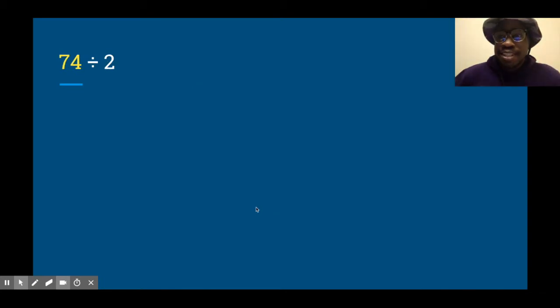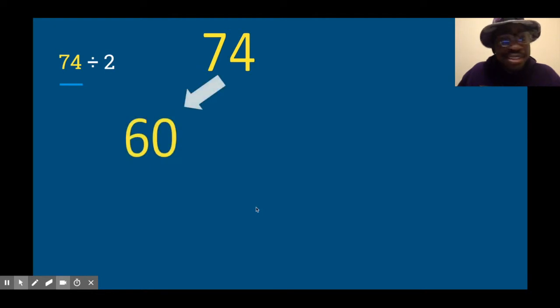All right, let's do another one. 74 divided by 2. Now this one's a little bit bigger than the other ones. Let's decompose 74 into smaller numbers. You could, if you want, decompose 74 into 20 plus 20 plus 20 plus 14. I'm not going to do that, but you could. I'm going to decompose 74 into 60 and 14.